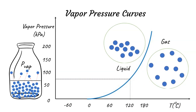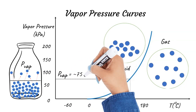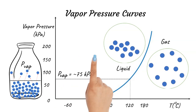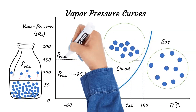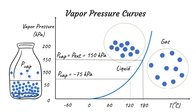For instance, if the temperature is 120 degrees Celsius, the corresponding vapor pressure is about 75 kPa. Boiling point is the temperature at which the vapor pressure of a substance equals the external pressure, or the surrounding pressure. For instance, if the external pressure is 150 kPa, the temperature at which the vapor pressure of the liquid equals 150 kPa is the boiling point for that substance.